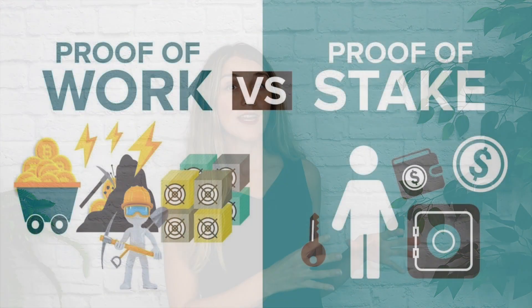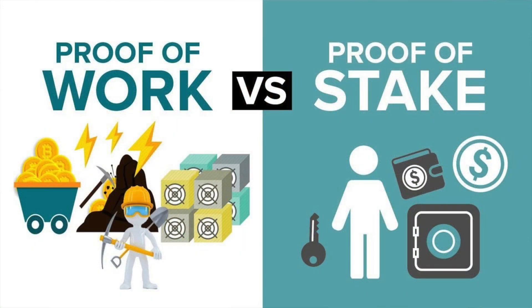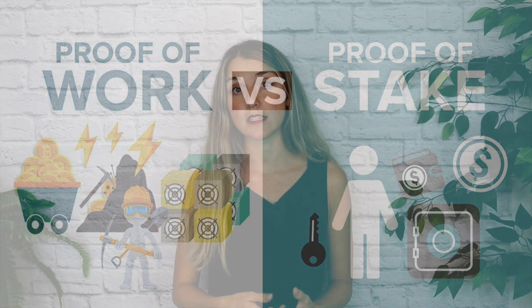Currently, Ethereum 1.0 runs on a consensus mechanism known as Proof of Work. Proof of Work relies on physical computing power, or miners, and electricity to build blocks, where Proof of Stake enables improved security, scalability, and energy efficiency. So instead of relying on physical miners and electricity, Proof of Stake relies on validators, or virtual miners, and deposits of Ether.